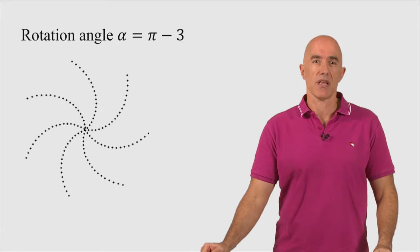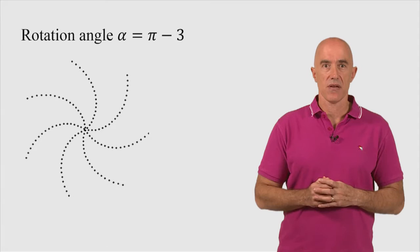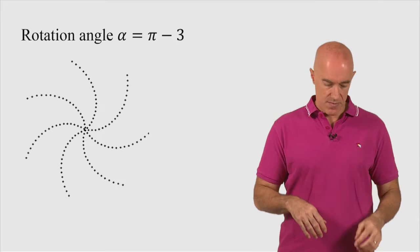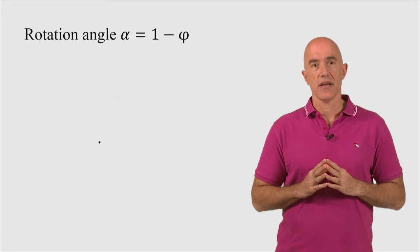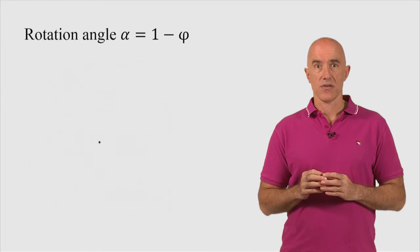So what should we use? Well, the problem with π minus 3 is because it has a very good rational approximation, 1/7. Which number doesn't have a very good rational approximation? The golden angle. So we'll use the golden angle for alpha. The golden angle is 2π times 1 minus little phi. So that's the angle of rotation is the golden angle. So alpha then is just 1 minus little phi.